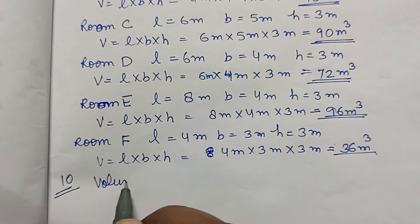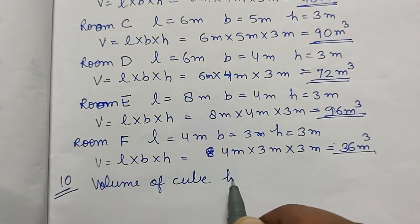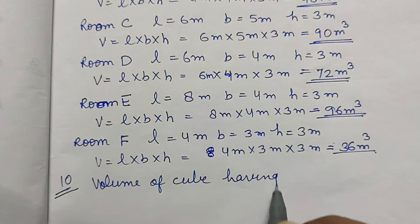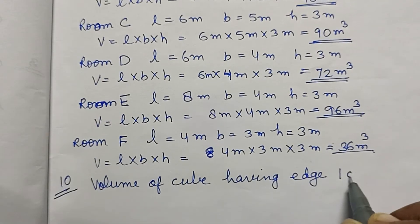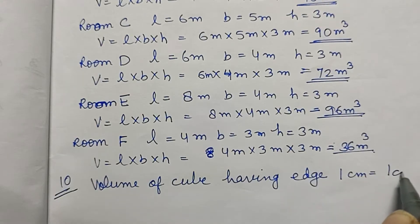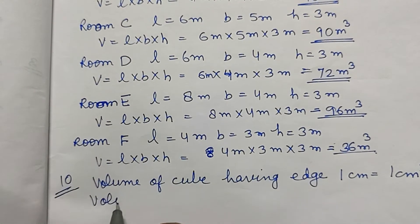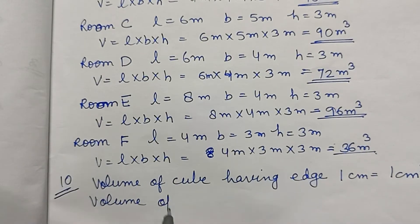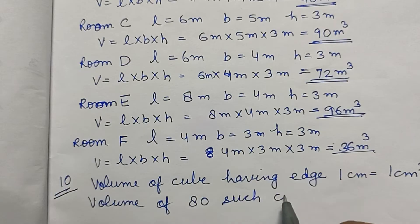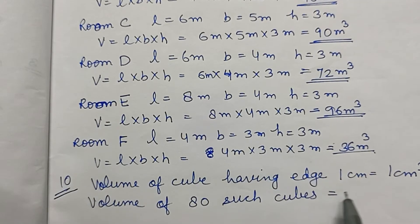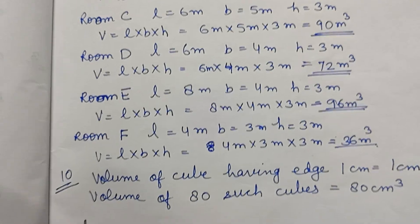The volume of a cube having edge 1 centimeter is equal to 1 centimeter cube. So the volume of 81 such cubes is equal to 81 centimeter cube.